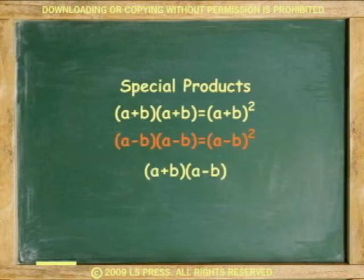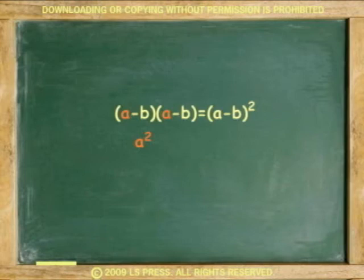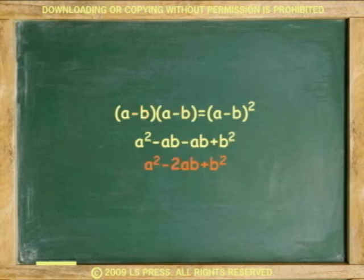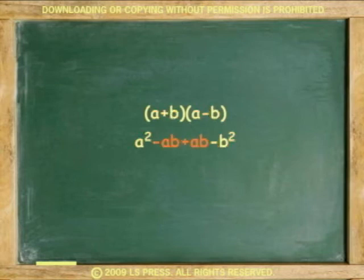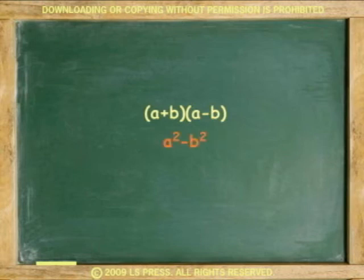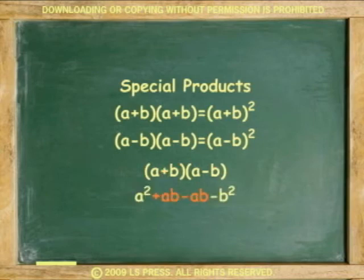The second one is (A minus B) squared. Using FOIL, the product is A squared minus AB minus AB plus B squared, which equals A squared minus 2AB plus B squared. The third one is (A plus B) times (A minus B). The product is A squared minus AB plus AB minus B squared. The middle terms cancel out — the negative AB and the positive AB — giving us A squared minus B squared.